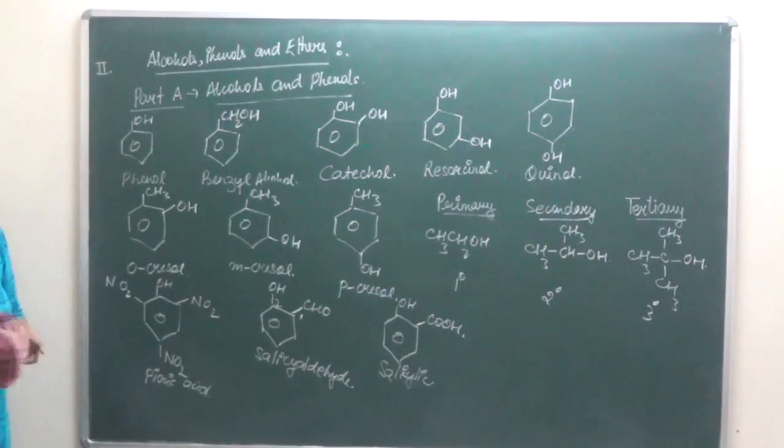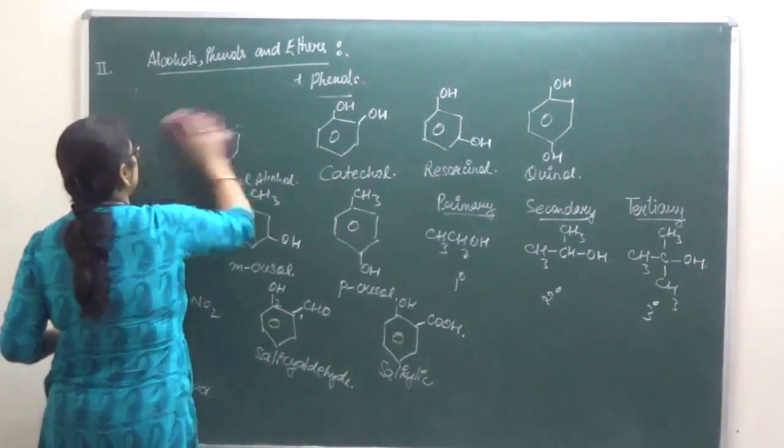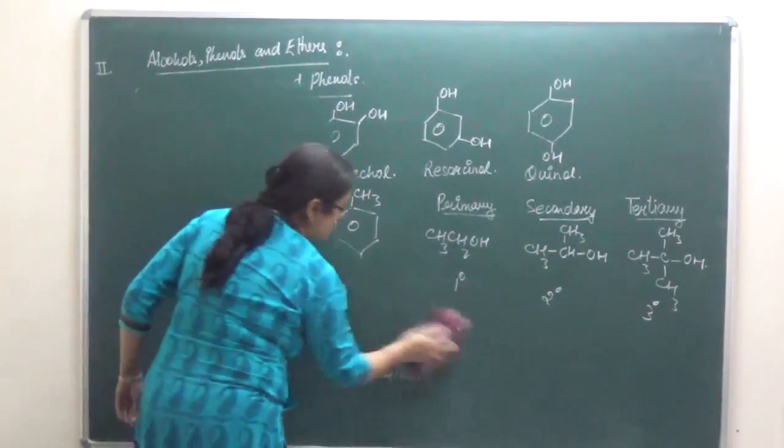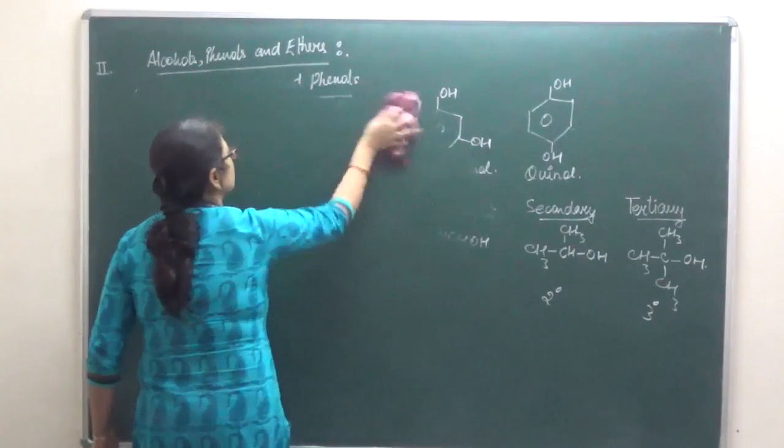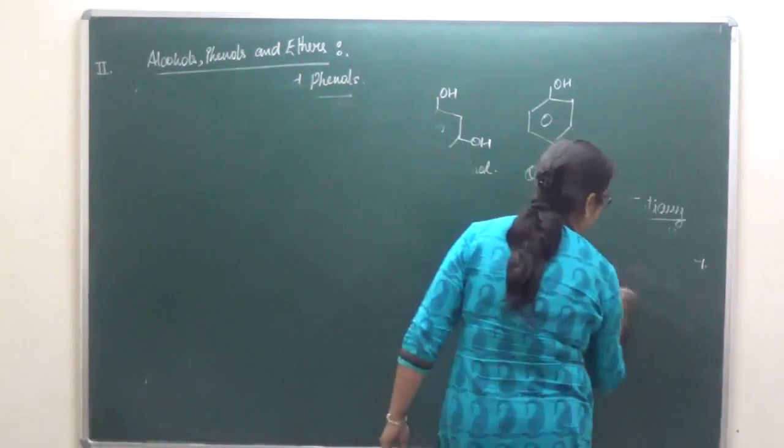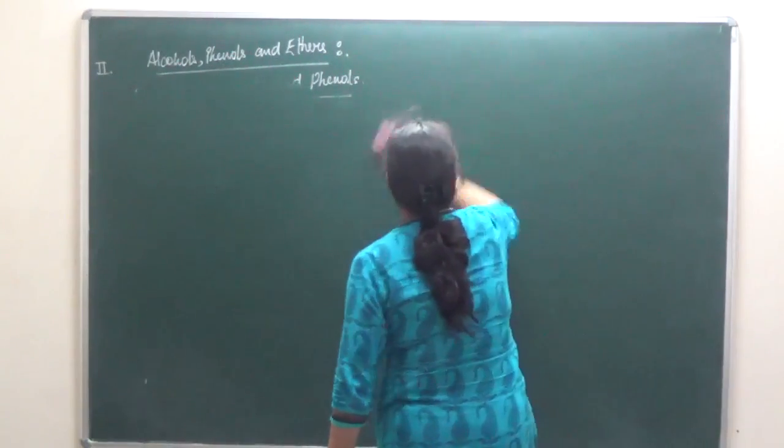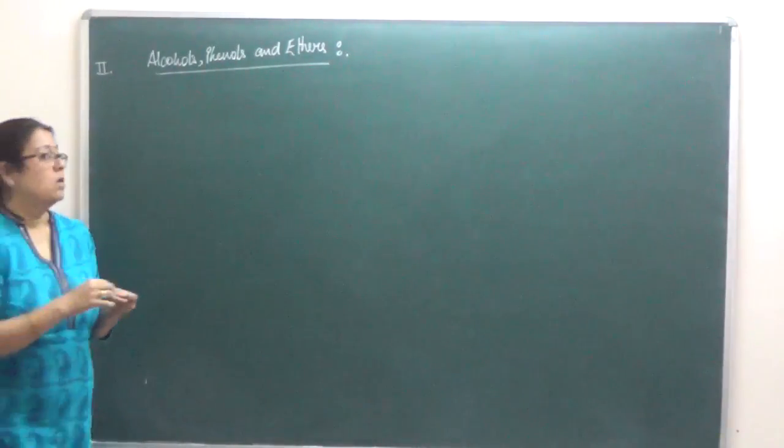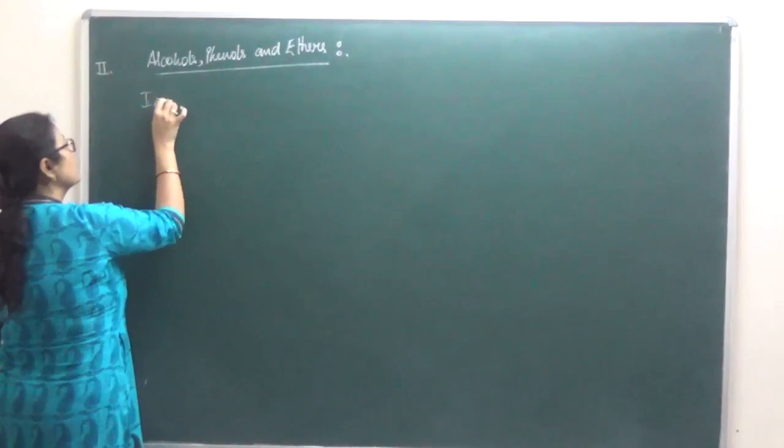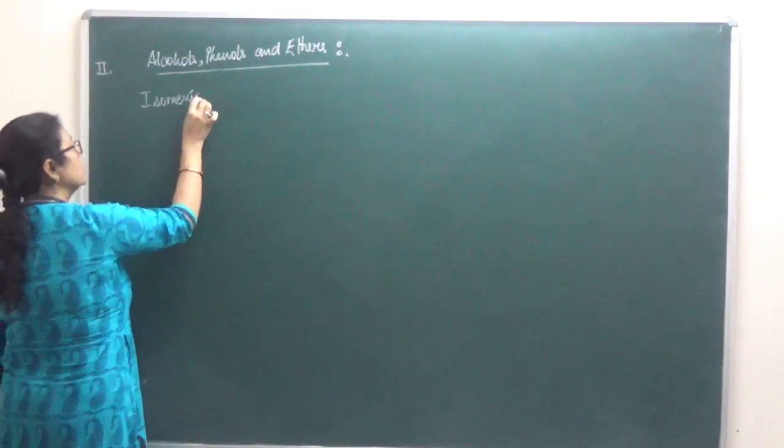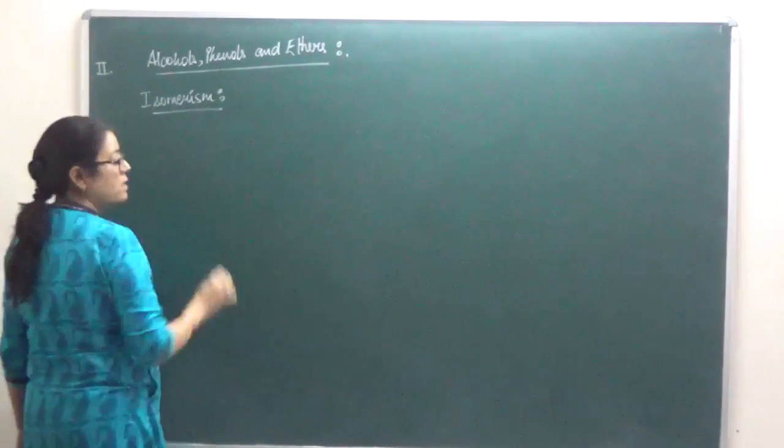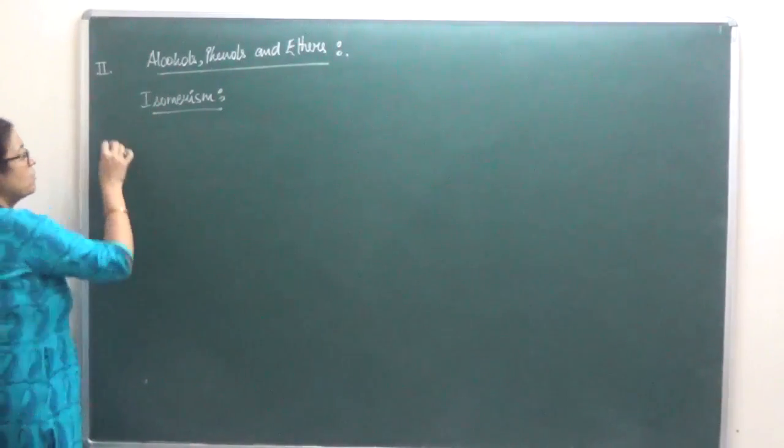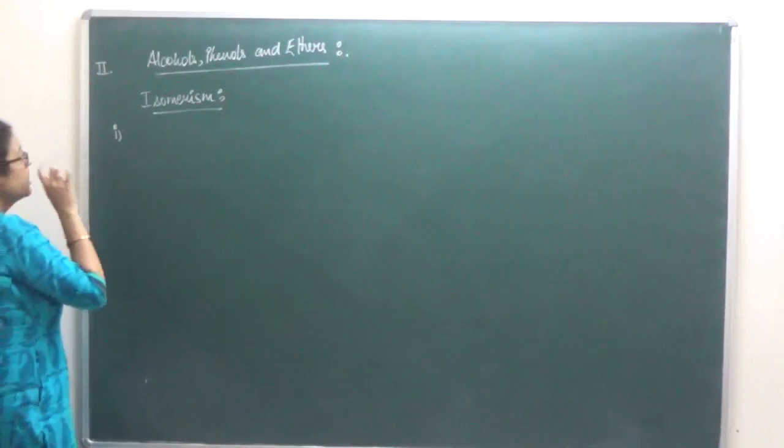The next is isomerism in alcohols. Isomerism - compounds which have the same molecular formula but different structural formula will be present here also. For example, position isomerism.